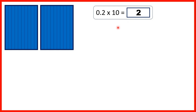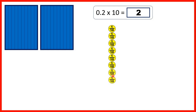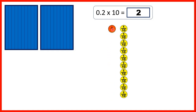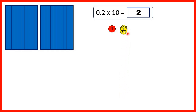We could also count using place value counters. There are 2 tenths, which is the same as 0.2. If we copy this 10 times — 1, 2, 3, 4, 5, 6, 7, 8, 9, 10 — we now have 20 tenths. But remember, we can join 10 of these tenths together to make one whole, and then we have another 10 tenths which can make another whole. So that's 2 ones, or 2, as our answer.